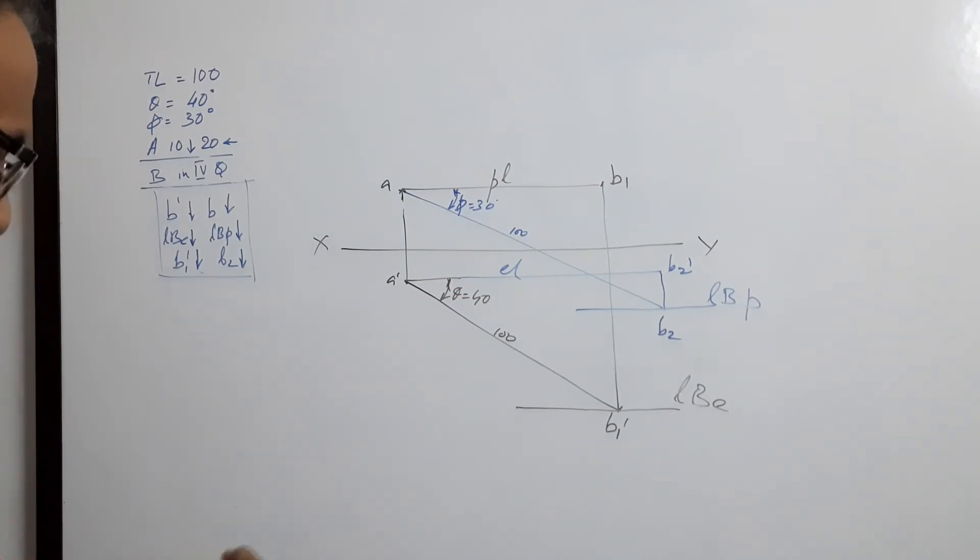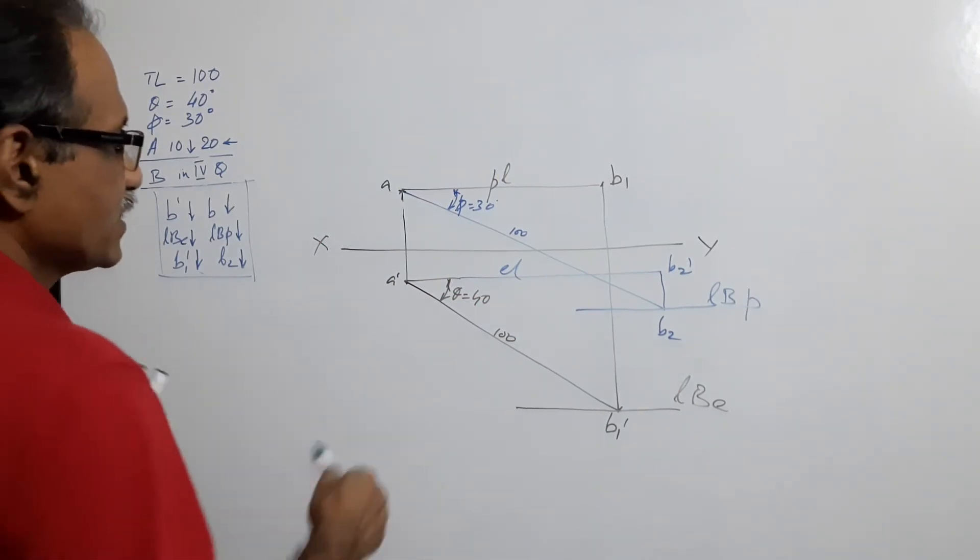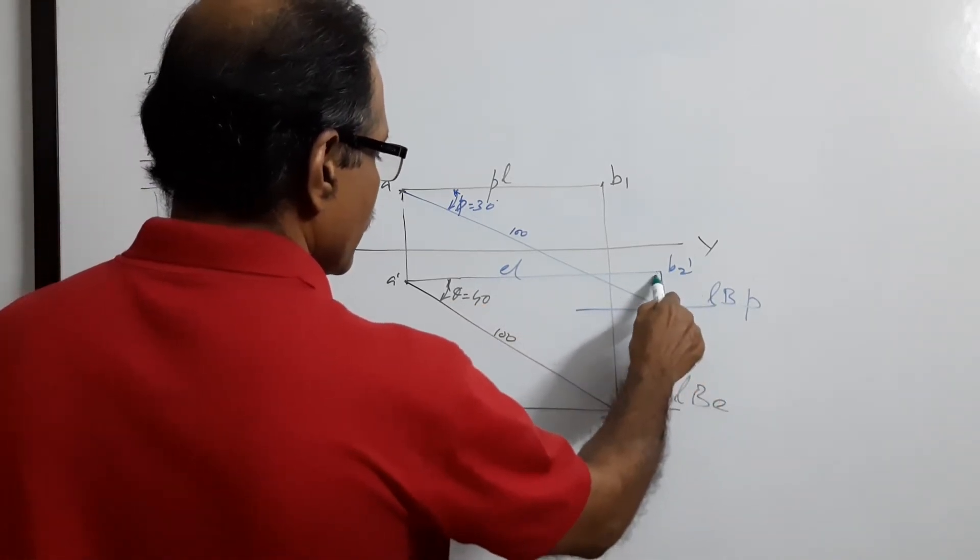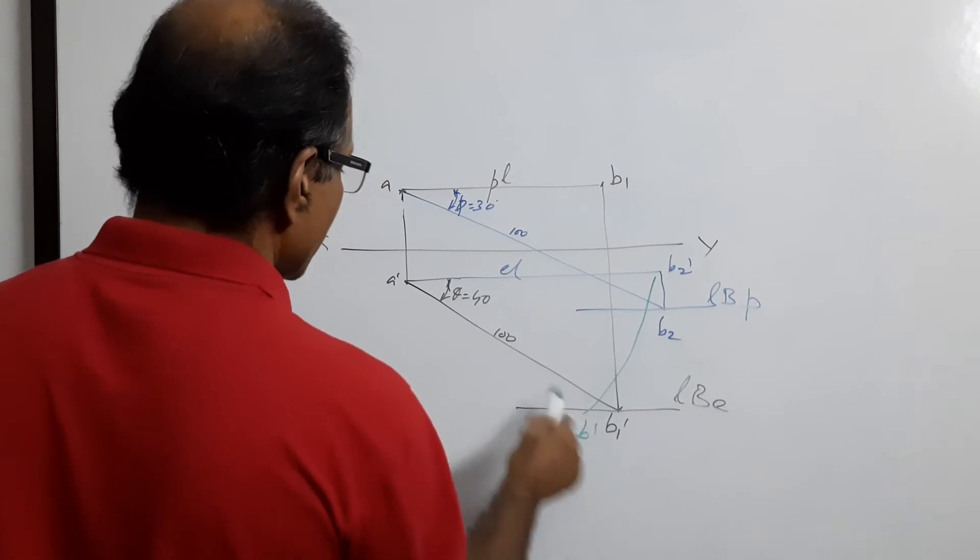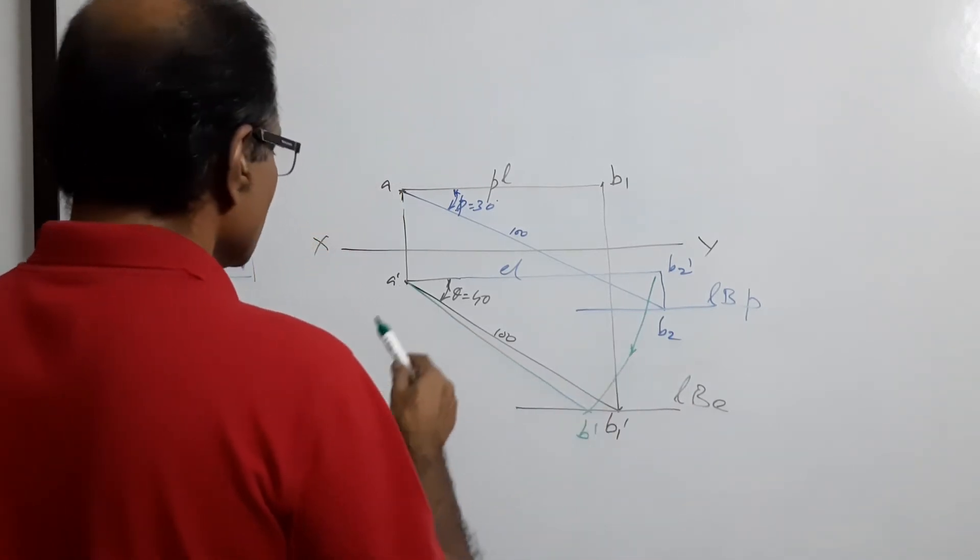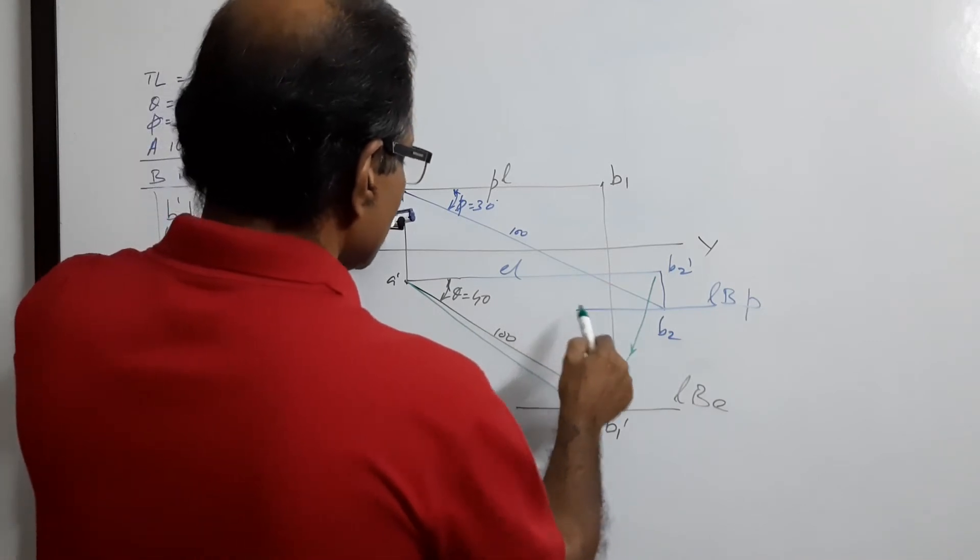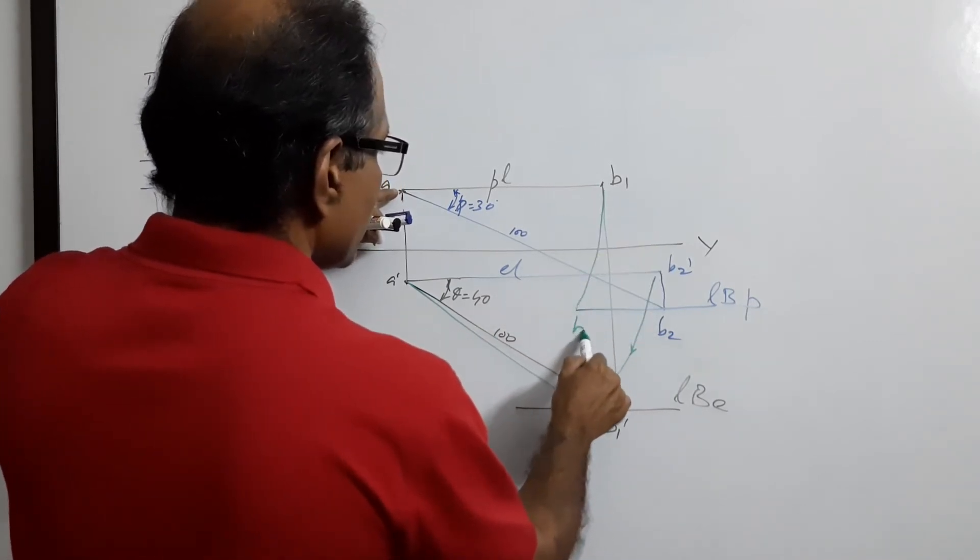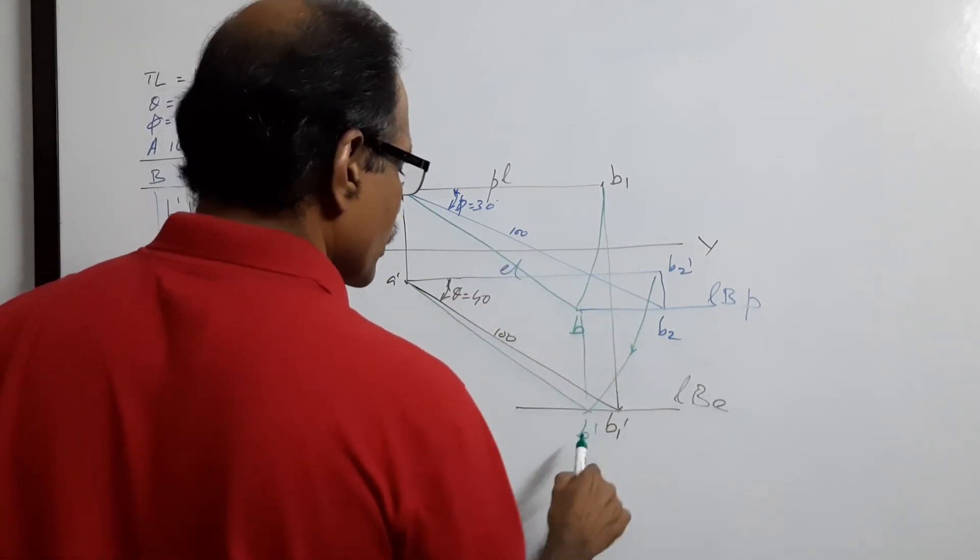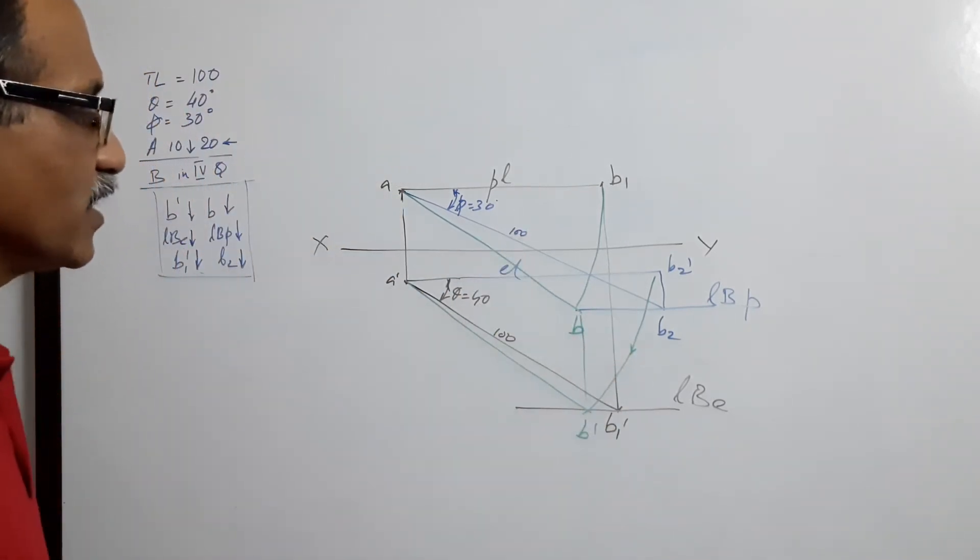Combine that. Elevation length as radius cut an arc on LB. B dash, A dash B dash is the deviation. A center plan length as radius cut an arc on LBP. AB is the plan. After drawing, if you connect them by a projector you will get the vertical.